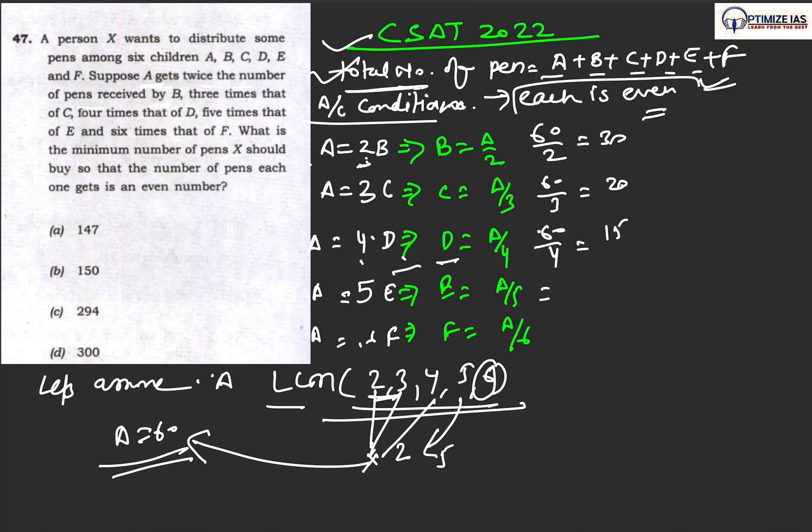This is 30, this is 20, this is 15, and this is 60. 60 by 5 is 12, 60 by 6 is 10. The question here says that each one is having even number of pens, but this is odd. So what we can do to make it even? By multiplying it by 2, that gives us 30. This is an even number, so that means we have to multiply each number by 2.